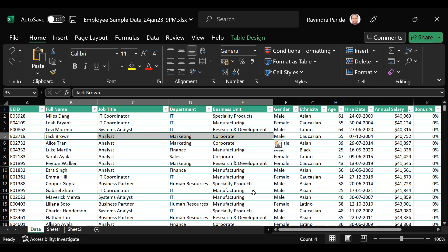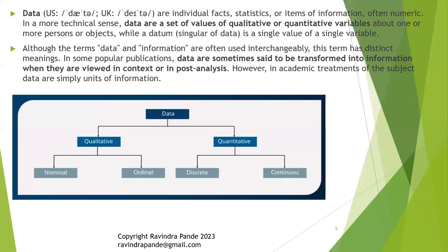Down below there's an image showing qualitative and quantitative data. Data can be categorized as qualitative and quantitative, and further into nominal, ordinal, discrete, and continuous. Nominal data is qualitative. Ordinal data is qualitative. Discrete data is quantitative. Continuous data is also quantitative. For example, in continuous data, if you're studying the population of a region — that's continuously changing data.